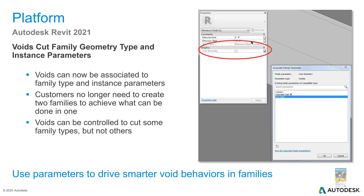They have also introduced the ability to use voids to cut geometry without having to create two separate types of families. For example, a drip edge family with a yes/no parameter to toggle visibility may have a void underneath that cuts the geometry where the drip edge inserts into the family.